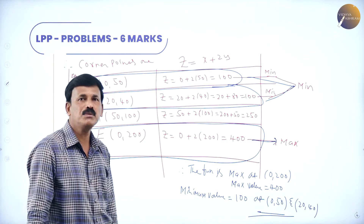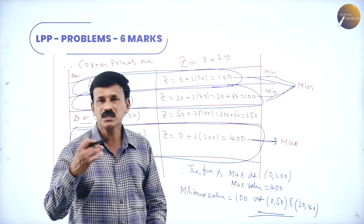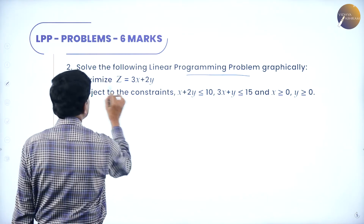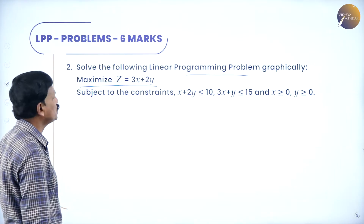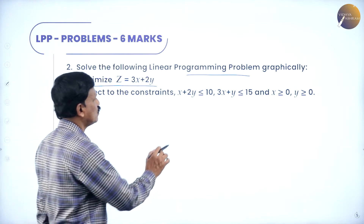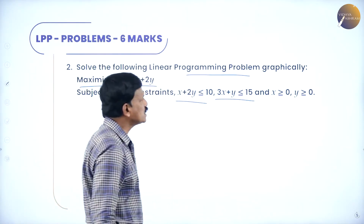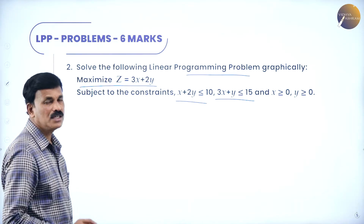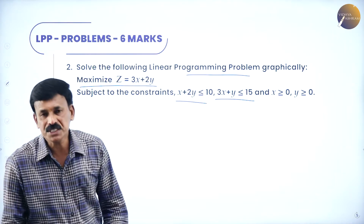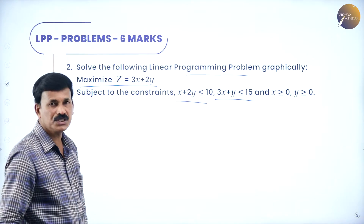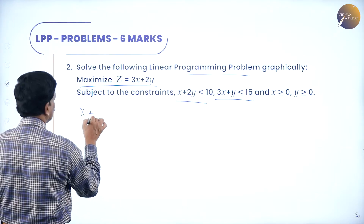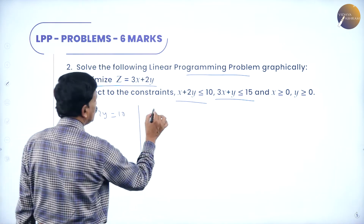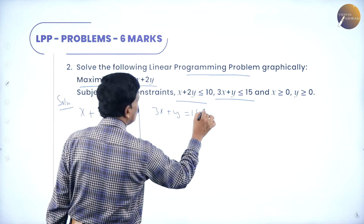This is how we solve an LPP problem. Now let us come to the next problem: solve the following linear programming problem graphically — maximize z = 3x + 2y, subject to the constraints x + 2y ≤ 10, 3x + y ≤ 15, and non-negative restrictions x ≥ 0, y ≥ 0. There are two equations given.